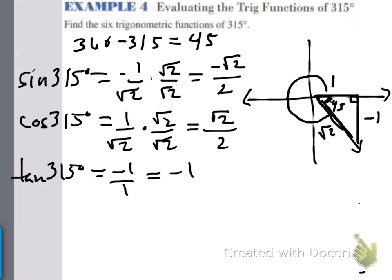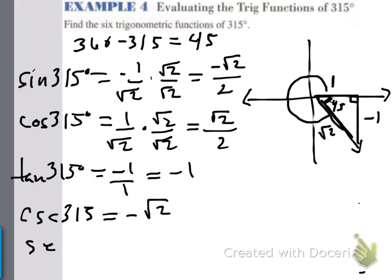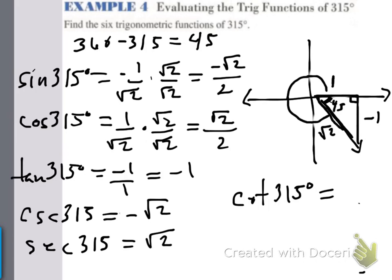Cosecant of 315 degrees equals negative square root of 2. Secant of 315 is the square root of 2. And the cotangent of 315 degrees is negative 1. So those are the 6 trig functions of the 315-degree angle. Notice this is in quadrant 4 — cosine and secant are the only ones that are positive.